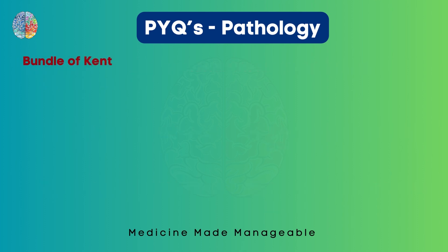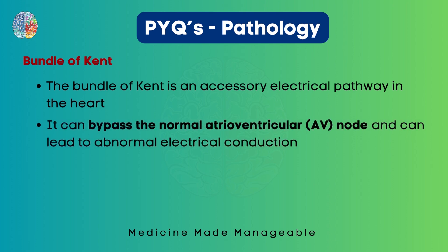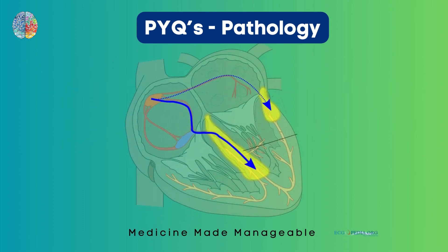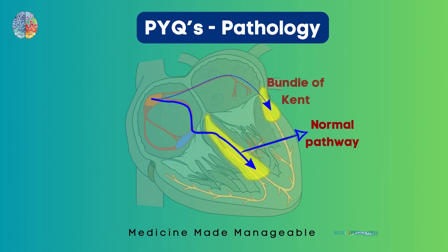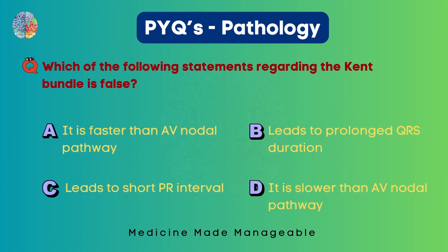The Bundle of Kent is an accessory electrical pathway in the heart that bypasses the AV node, leading to abnormal electrical conduction. In the image, the dark blue arrow shows the normal pathway through the AV node, while the dotted line shows the Bundle of Kent accessory pathway. Normally, conduction through the AV node is slow — this is the AV nodal delay. Any pathway bypassing it will be faster. Since the question asks for the false statement, the correct option is D.